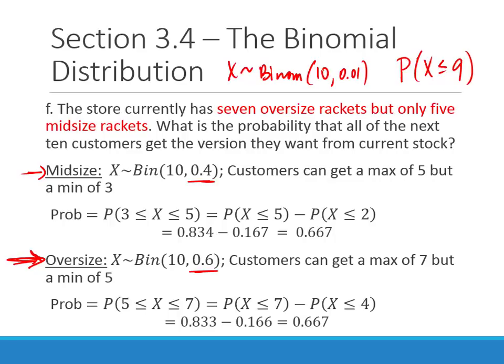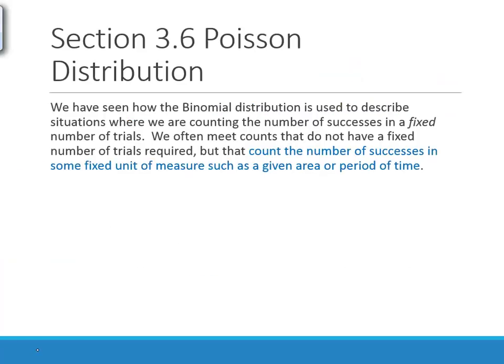Let's jump back into Section 3.6. We're talking about the Poisson distribution. In the binomial — what we looked at in Section 3.4 — we were looking at situations where the number of trials was fixed. For example, out of 10 customers, or 25 times playing a game — a fixed number of observations or trials. Then we counted the number of successes in that fixed number.